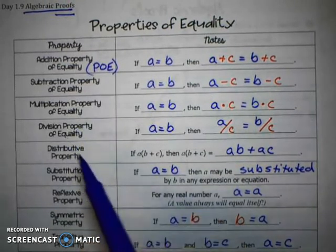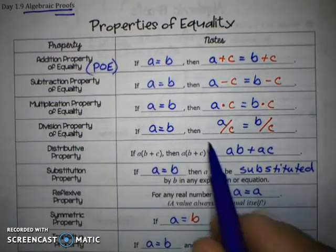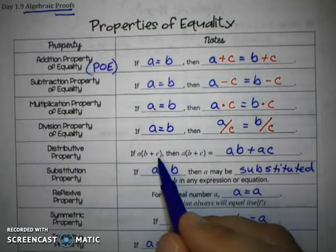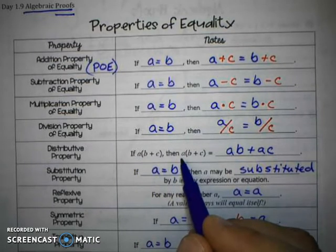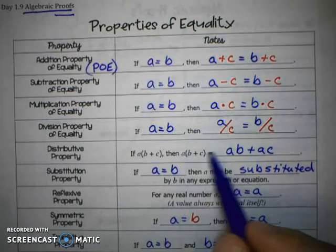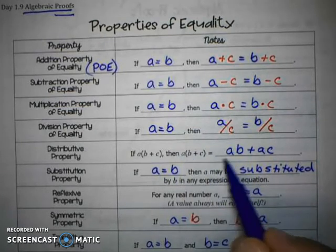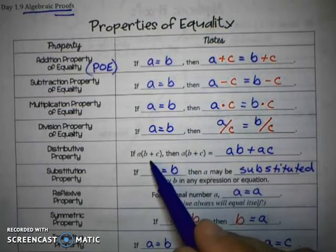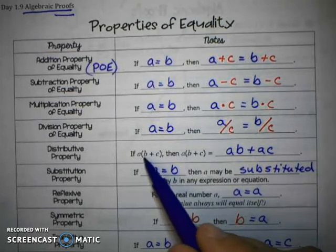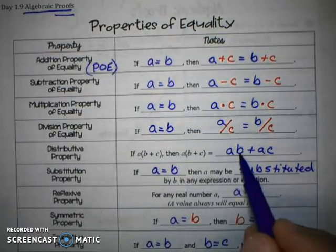Then the distributive property is one we're familiar with. If we have a value multiplied by a quantity, then we can distribute that quantity to both parts inside. We'll distribute that value, I mean, to both parts of the quantity. So if I have A times B plus C, then that equals AB plus AC.